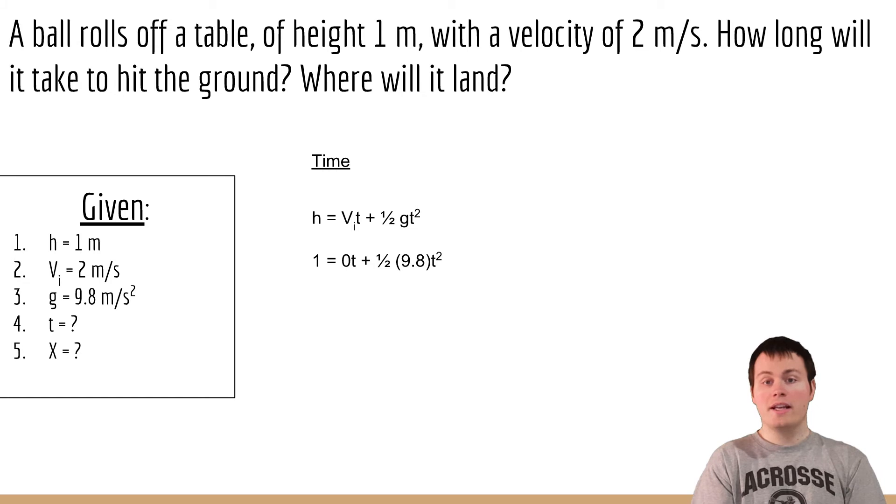So we plug in what we know. There is no initial velocity because in this case we're looking in the vertical direction and there's no initial velocity in the vertical direction, so that's just zero.